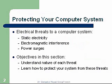Protecting your computer system — electrical threats to a computer system. We have several: static electricity, which is probably the most dangerous; electromagnetic interference, which could be from a motor or something causing interference; power surges; and line surges from the power generating station. Objectives in this section: understand the nature of each of these threats and learn how to protect your system from them.